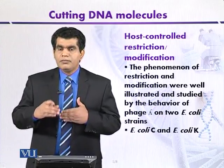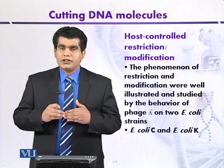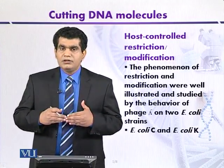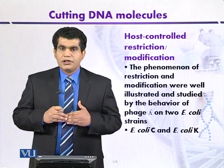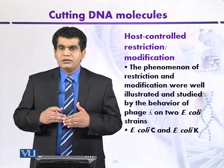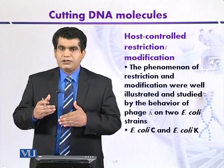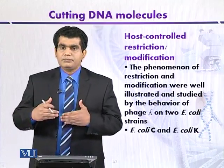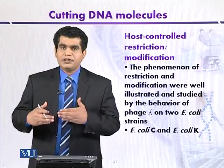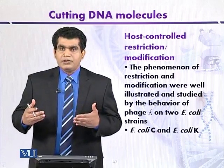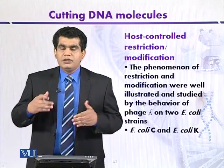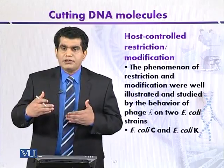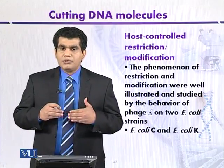But once bacteriophages that were grown on the second host, E. coli K, are recycled back through the first host, E. coli C, and then used to re-infect E. coli K, they will again be restricted. This means that some non-heritable change is introduced after the multiplication of bacteriophages on E. coli K, enabling them to re-infect and cause lysis of that same strain. This is called modification — during replication within E. coli K, the DNA has been modified, enabling it to grow in E. coli K.